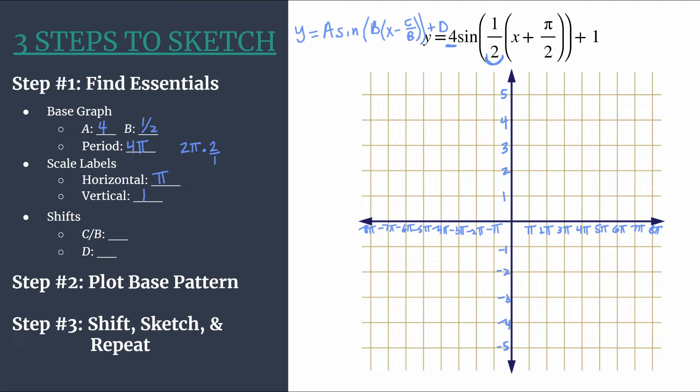So our last big thing for our essential information is to identify our shifts. And because we factored out b, it's very easy to see that phase shift. We talked about that earlier. So our phase shift is happening in here with x. And take a look at the general form. We see it's x minus c over b. So remember, that's like x minus negative π/2. So negative π/2 is our phase shift or our horizontal shift. And if it helps you to write that that's left, you can do that.